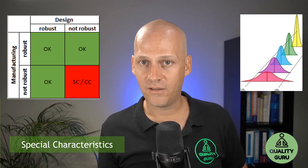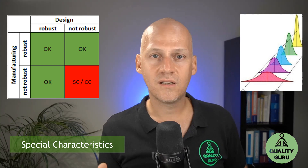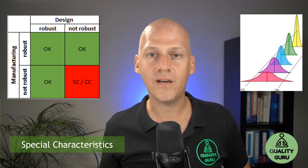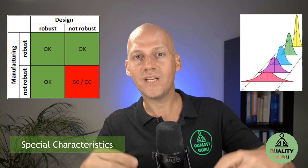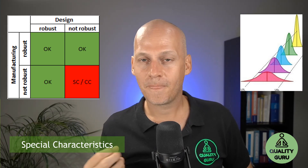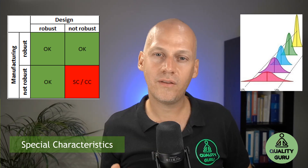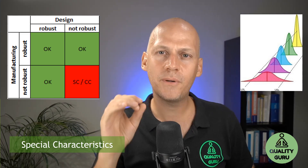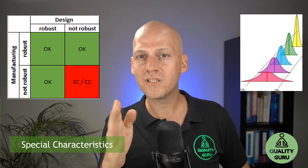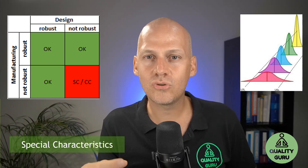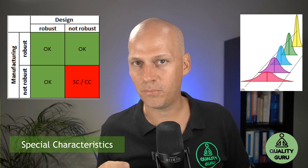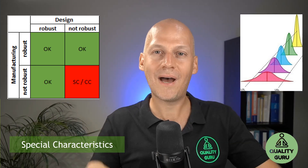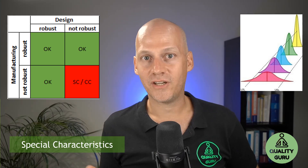We have a problem when the design is not robust and the manufacturing process is also not robust. For example, the designer comes to you in an FMEA session and says: 'My design has certain weaknesses — under certain conditions there might be variation and this might lead to loss of function.' Then you go to the production team and say: 'I need you to produce always very precisely on point, because if your process varies too much, there could be a failure of function. Can you ensure this? Is your manufacturing process robust?'